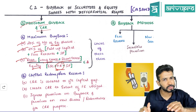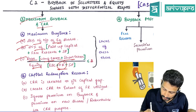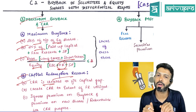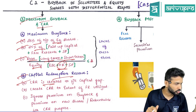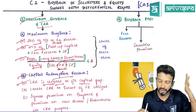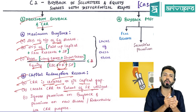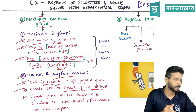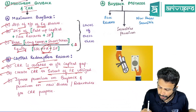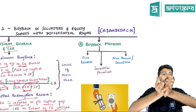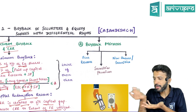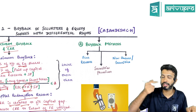Whenever you redeem preference shares or do a buyback of equity shares, the capital will reduce, and to fill that capital gap you have to create a reserve called Capital Redemption Reserve, or CRR. CRR is created to the extent of the free reserves utilized. Ignore premium on buyback for CRR purposes, because CRR's intention is only to fill the capital gap — capital is always shown at face value, so premium does not affect CRR calculation.